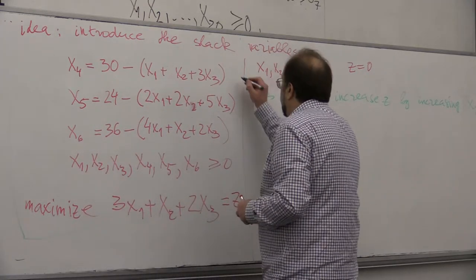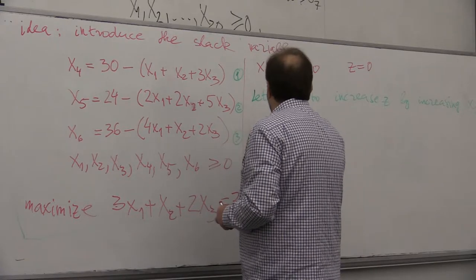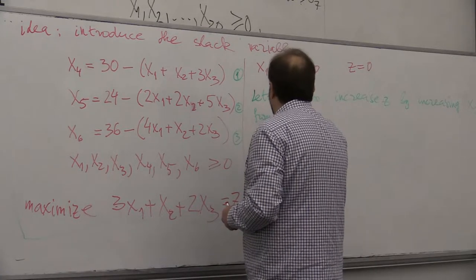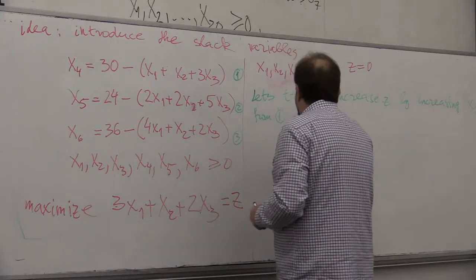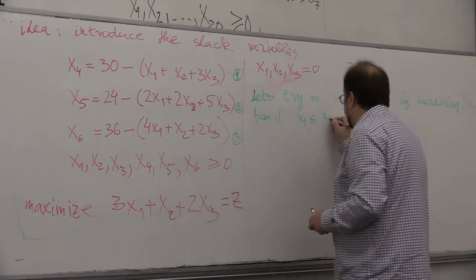From 1, so this is 1, this is 2, this is 3, so from 1 we get x1 should be smaller or equal than 30.